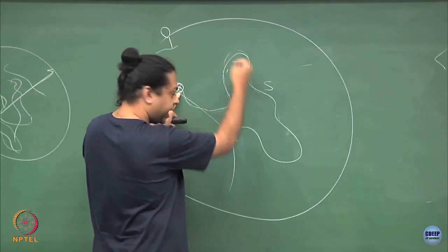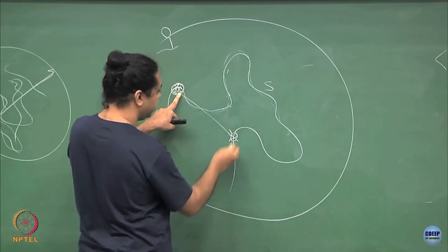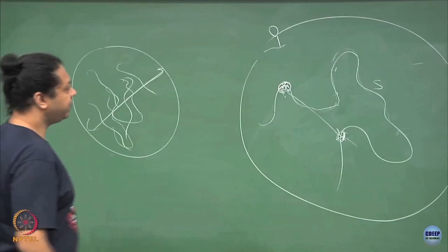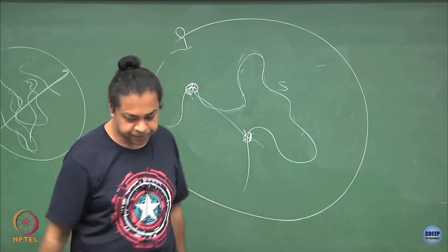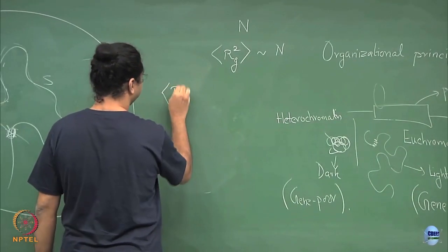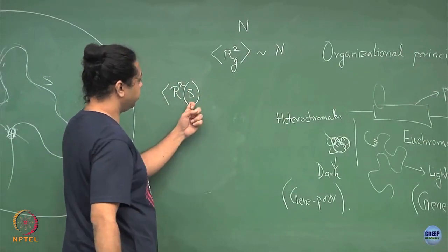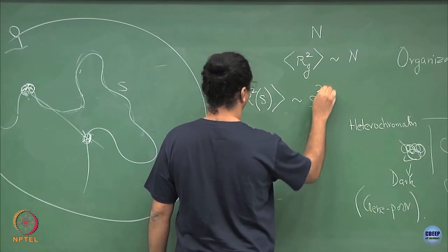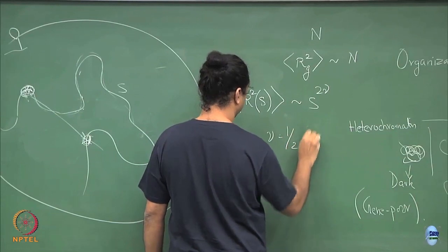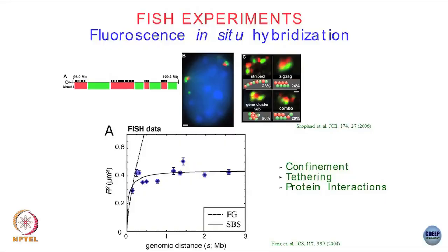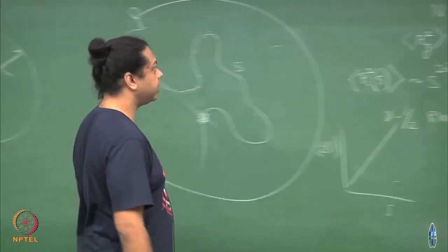You can do this for every segment and get the average separation between two segments. For a standard random walk polymer, the spatial separation R between two sites separated by a genomic distance S along the contour would go as S to the power 2ν, where ν equals one-half for a random walk polymer. So R² would go as S — it would keep growing. If I plotted R² versus S, it would grow continuously.